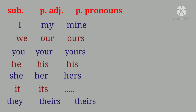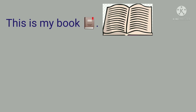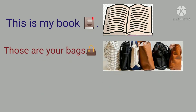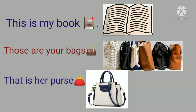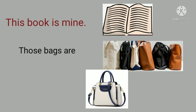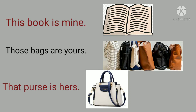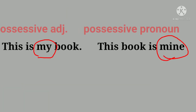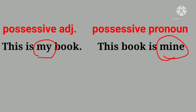Here is a table comparing possessive adjectives and possessive pronouns. Possessive adjectives are: my, your, his, her, its, and their. Possessive pronouns are: mine, ours, yours, his, hers, its, and theirs. For example: 'This is my book. Those are your bags. That is her purse.' Here my, your, and her are possessive adjectives. But in 'This book is mine. Those bags are yours. That purse is hers.' — mine, yours, and hers are possessive pronouns. These are the two ways to show possession.